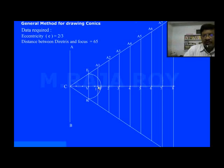Now take 1A1 as radius, F as center, and draw an arc cutting the 1A1 line. Draw one arc on top side and another on bottom side. Similarly take 2A2 as radius, same F as center, draw an arc top and bottom. Similarly 3A3 radius, F as center, draw an arc. Repeat the same procedure with other points also.